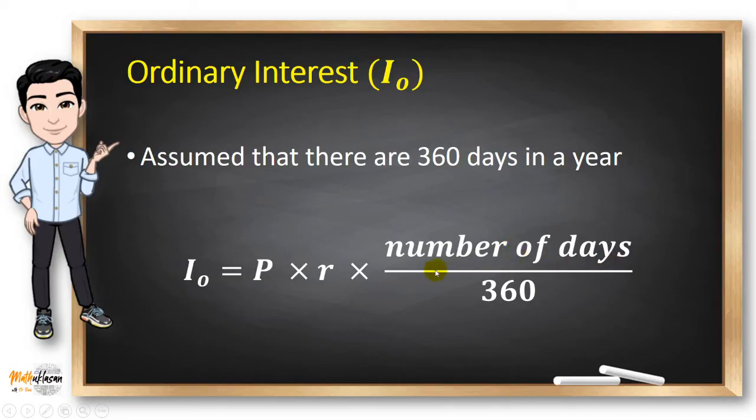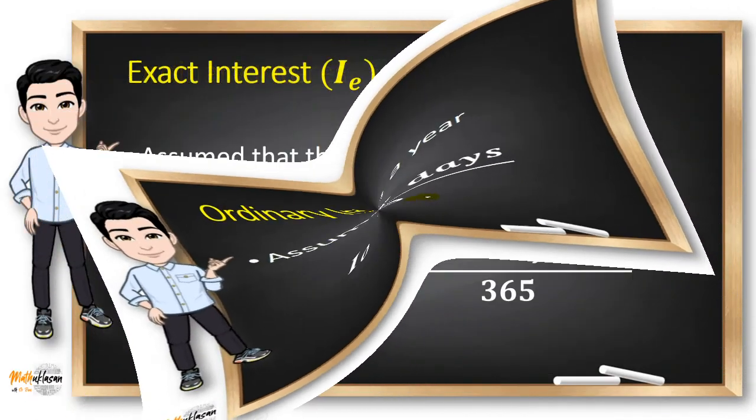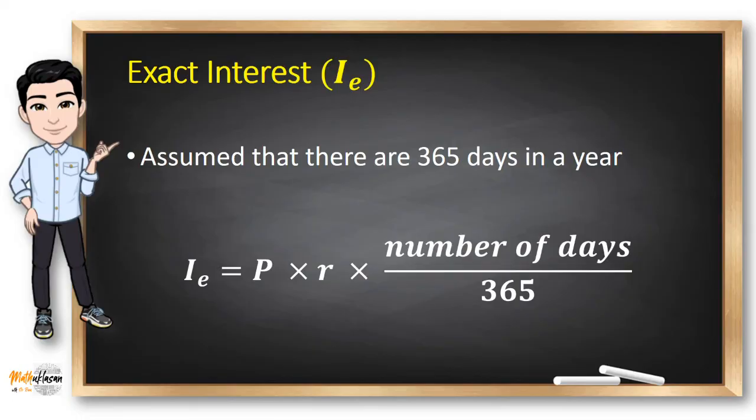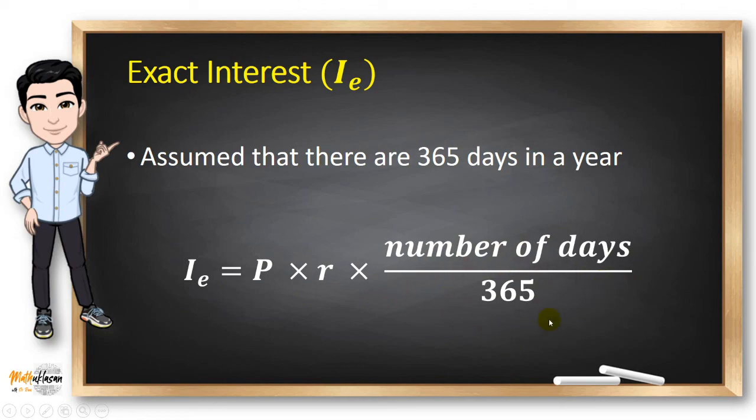On the other hand, exact interest, denoted in this video as I sub E, assume that there are 365 days in a year. So the simple interest formula becomes I sub E equals P for the principal times rate given times number of days divided by 365.